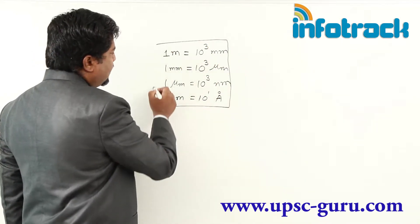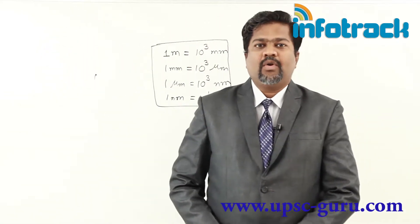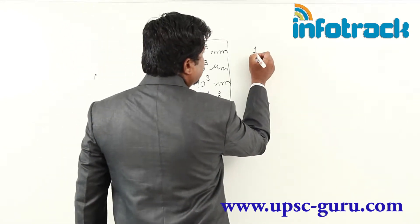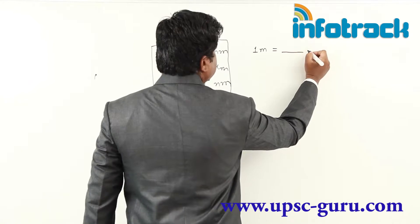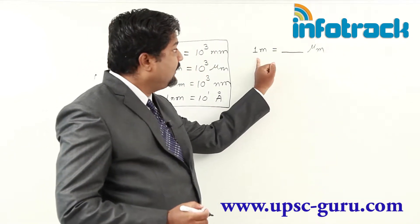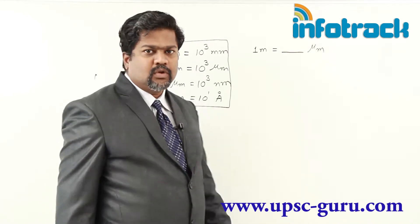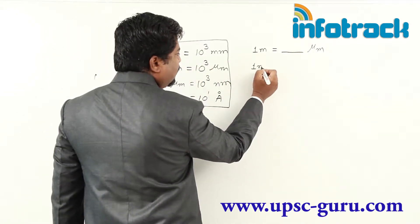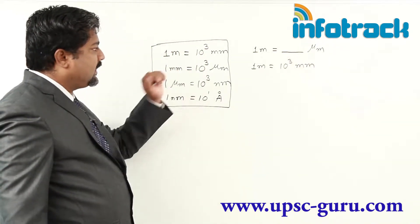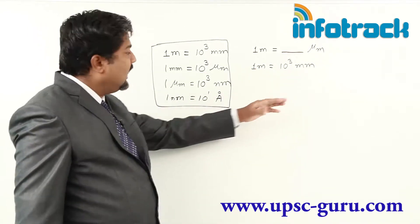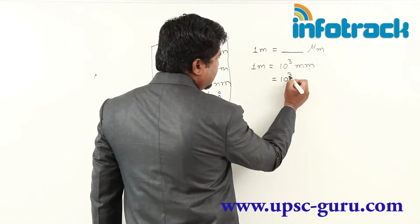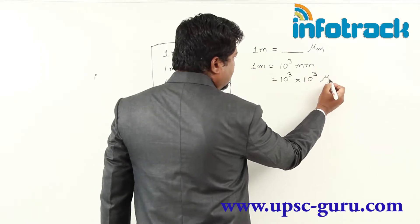So this is the basic chart we have to keep in mind. Now we are going to discuss how to convert units. It is very simple if you are thorough with laws of indices. Let us check: 1 meter equals how many micrometers? The first equation: 1 meter equals 10 raised to 3 millimeters. The second: 1 millimeter equals 10 raised to 3 micrometers. So I should multiply 10 raised to 3 millimeters by 10 raised to 3 to get micrometers.